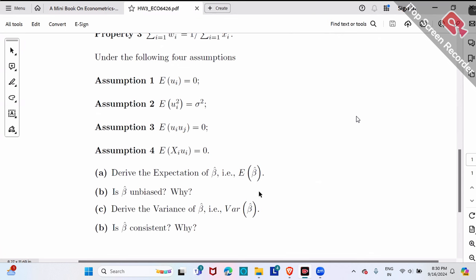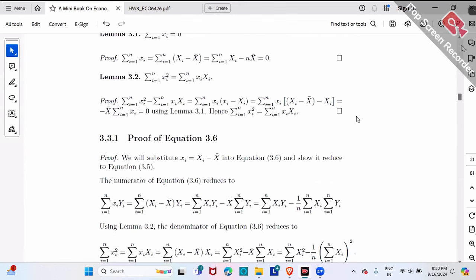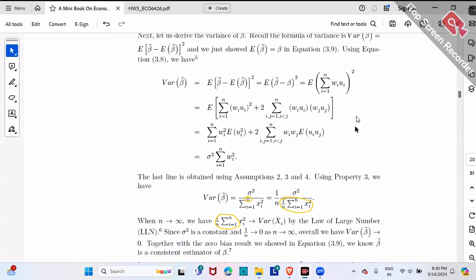Later on, when we discuss those assumptions, actually you can always go back to the proof right here. You can see, for example, when we derive the variance, we use assumption two, assumption three, assumption four. So that later on, if for example assumption two or assumption three is not true - for example, variance of U_i is not a constant sigma square anymore - then immediately, from here to here is not simply sigma square anymore. Right? You have to modify this so that variance is not simply this anymore. So that the consistency, the variance will be affected.